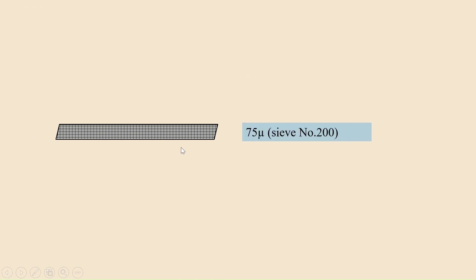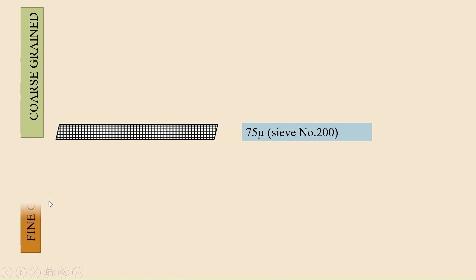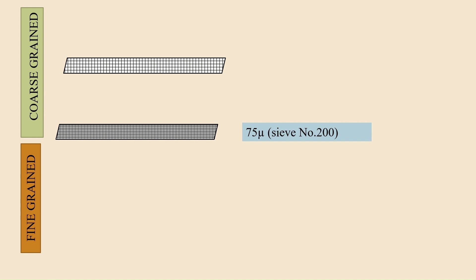How to classify coarse and fine-grained soil? Take a 75 micron sieve. If more than 50% of the particles are retained on the 75 micron sieve, then we call them coarse-grained soil. If more than 50% of the particles are passing through the same 75 micron sieve, then they come under fine-grained soil. For coarse-grained soil, we have two categories: sand and gravel. To classify sand and gravel, take a 4.75 mm sieve. If more than 50% of the particles are retained on the 4.75 mm sieve, then we call it gravel. If more than 50% of the particles are passing through the 4.75 mm sieve, then they are sand.